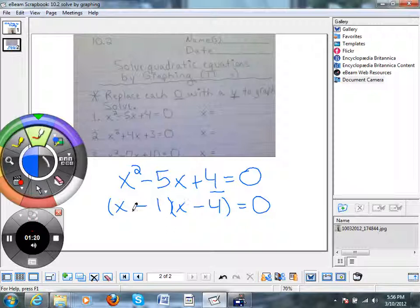And then we take each of those little factors and we set them each equal to 0. So we get x minus 1 equals 0, so x equals 1. x minus 4 equals 0, so x equals 4. So we have two answers, 1 and 4. Well, I want to show you how we can use the graphing calculators to find those exact same two answers.